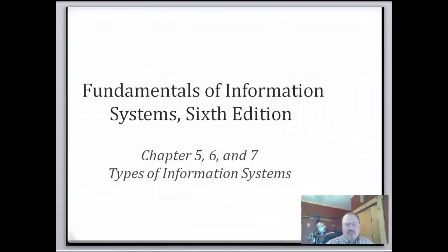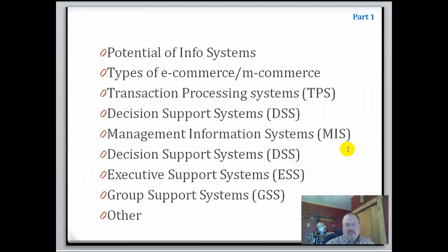Hi, VMIS 270. This is chapter 5, 6 and 7, and these three chapters really deal with different types of information systems. We're going to talk about types of e-commerce and m-commerce, but then we're going to take a look at different kinds of information systems: TPS, DSS, MIS, ESS, and so on and so forth.